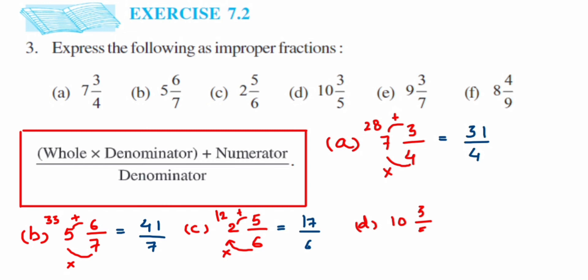The next one, d, is 10 3/5. First multiply 5 into 10, which is 50. Now add 50 plus 3, which is 53. So this is equal to 53/5. Denominator will not change, it will be the same.